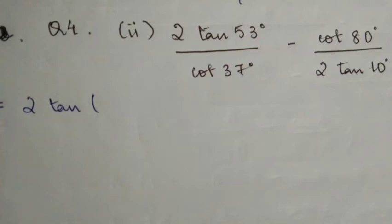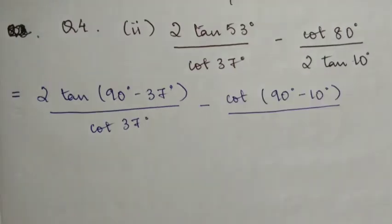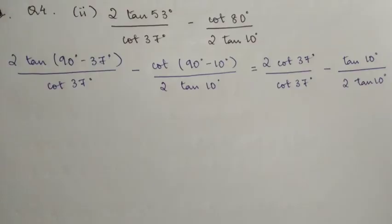You will write 2 tan (90° - 37°), and this equals cot 37°. So you can write it like that. Similarly, cot 80° can be written as cot (90° - 10°), which equals tan 10°.